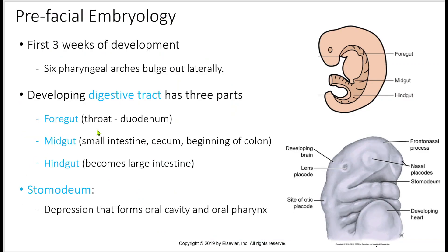Before the face actually appears, in the first three weeks we'll get some bulges that come out called pharyngeal arches. We'll have six of them — it starts as three but ends up as six. These pharyngeal arches are labeled one through six as they start appearing. You don't have to recognize the pictures; these are just for illustration.